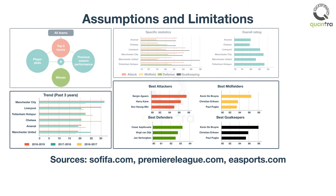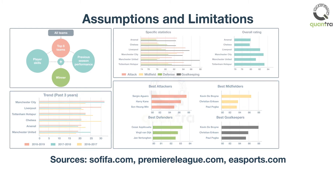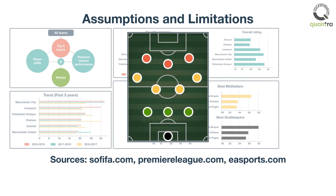You should clearly communicate the important assumptions and limitations you have made. For example, to calculate the overall rating of the team, you have assumed a 3-4-3-1 formation for all the teams. It's important that you communicate these to the stakeholders.